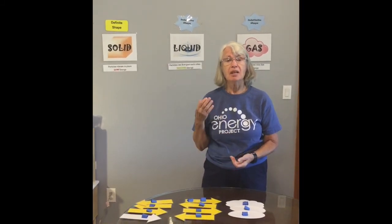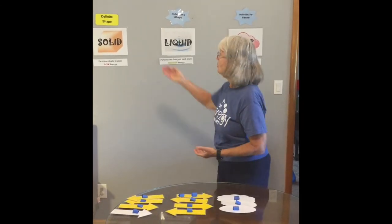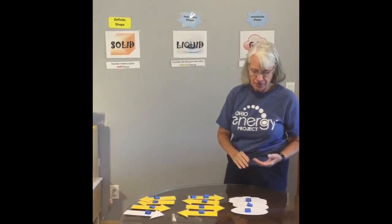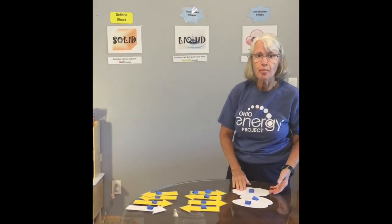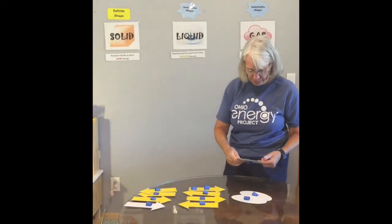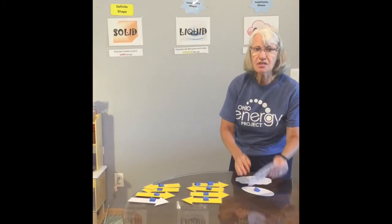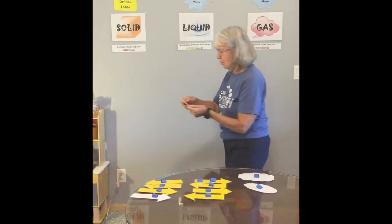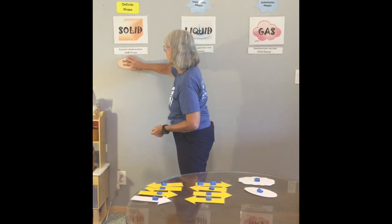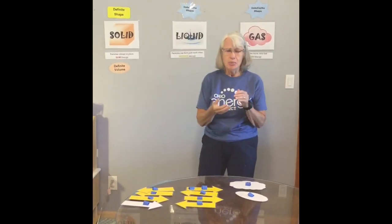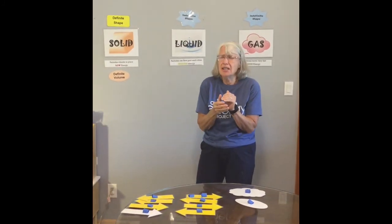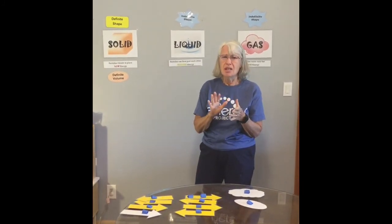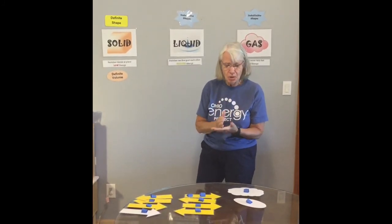Remember when we started, we introduced matter as having mass and volume. We talked about the shape of each one of these phases, and now we're going to talk about the volume. When we have a solid, we have a definite volume — we can't change it. We can't take a block of wood and squish it together and make it any different. The shape is always the same.